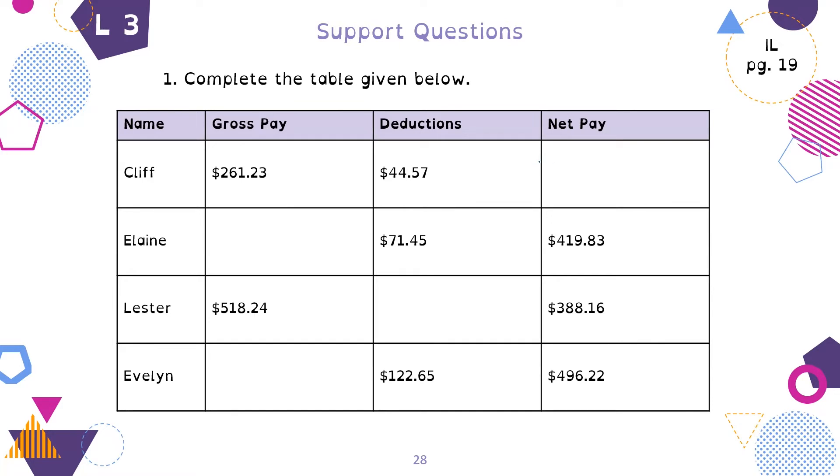For number one on page 19, if you know your gross pay, $261.23, take away $44.57, that's setting it up for deductions. If we know our net pay and our deductions, we can figure out gross pay by adding them together. So $419.83 plus $71.45 tells us our gross pay. If we know our gross pay and our net pay, we can figure out deductions by doing gross pay take away net pay. For Evelyn, we know our net pay, we add it to our deductions to figure out our gross pay.